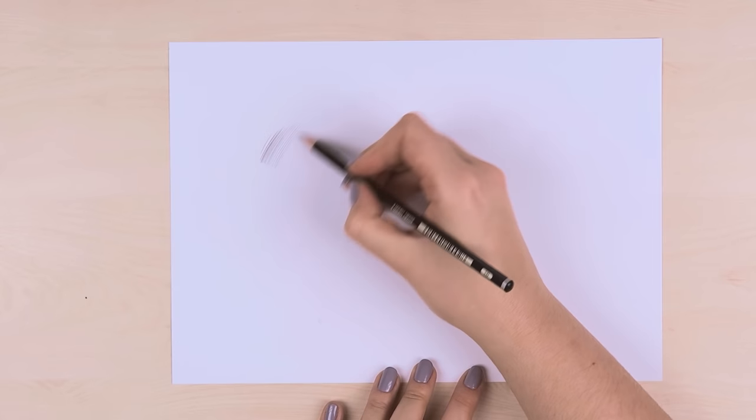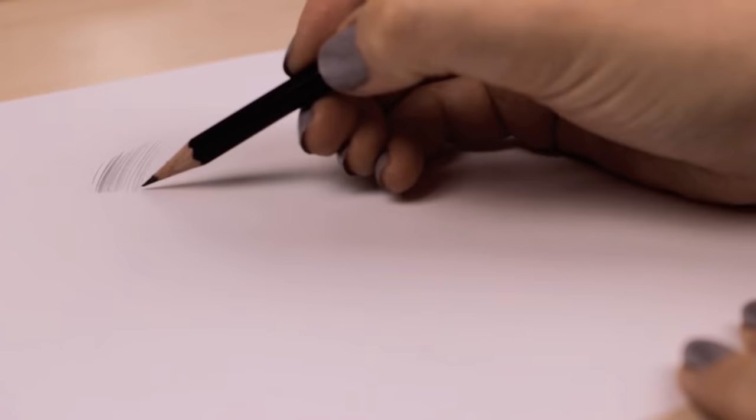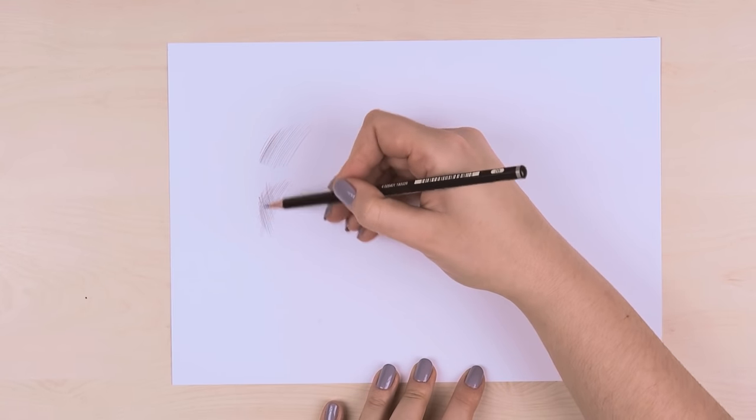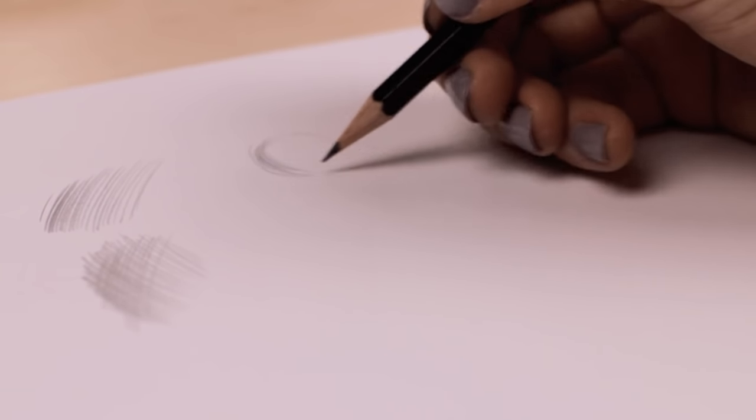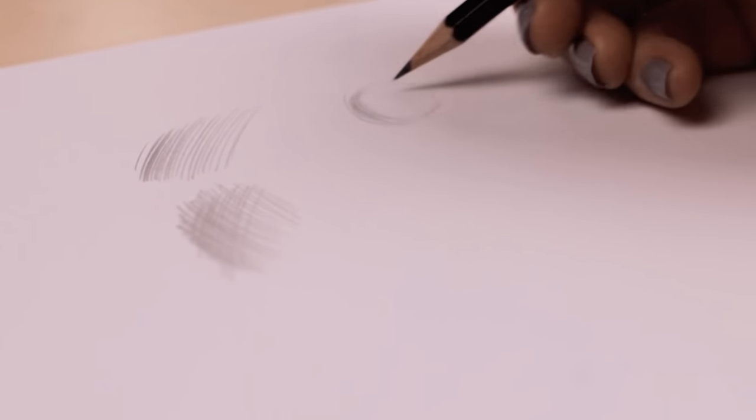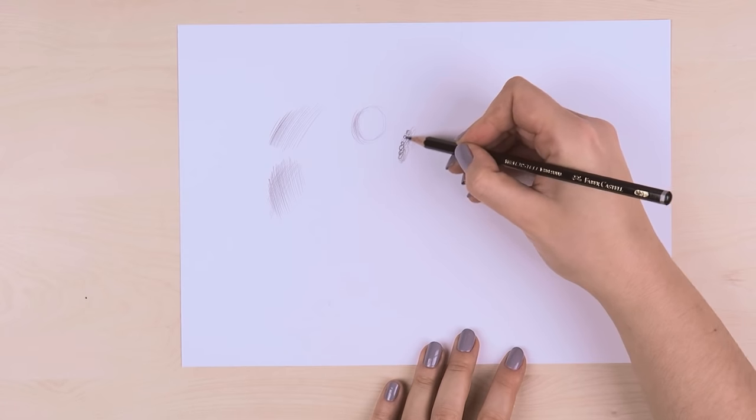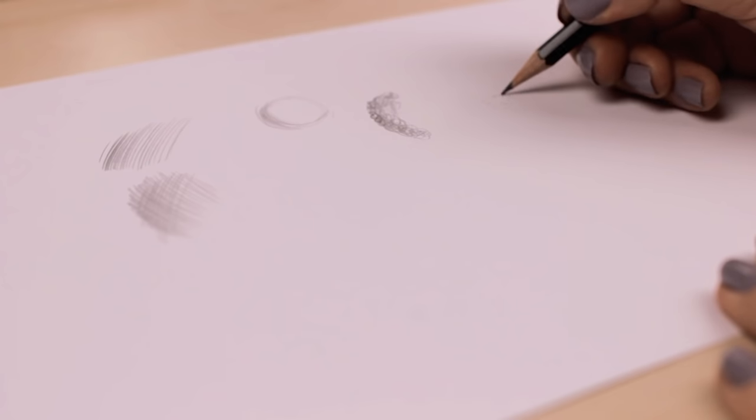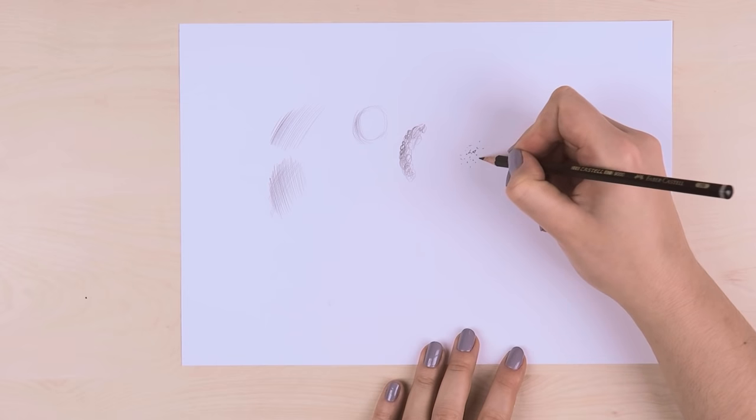By hatching and cross-hatching where you either add shadows by simple lines or by cross-over lines. You can contour and cross-contour by following the shape of the object. But you can also add shadows with random lines that might not make sense. Or you can add them by stippling or simply by just smudging the pencil following the shape of the object.